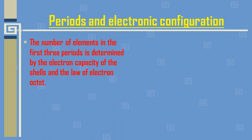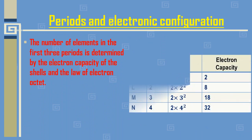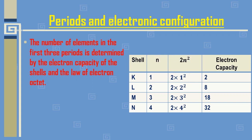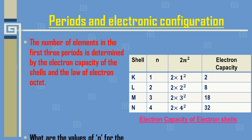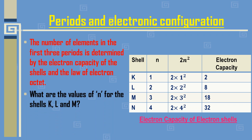The number of elements in the first three periods is determined by the electron capacity of the shells and the law of electron octet. According to this law, the last shell should hold only up to eight electrons. There is also the law of electron duplet — in the last shell, only two electrons, like in helium. There are four shells: K, L, M, and N, and the formula to calculate the electron capacity is 2n².